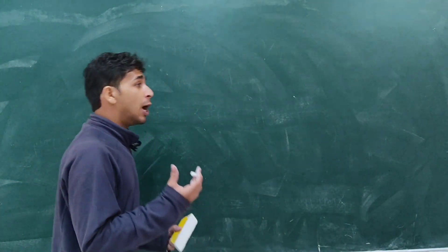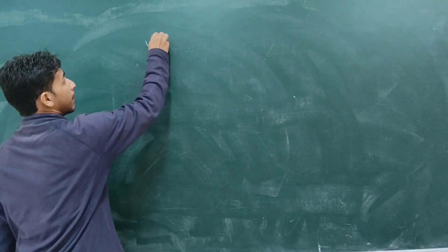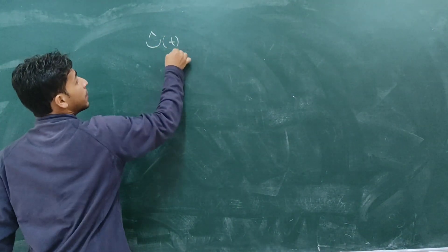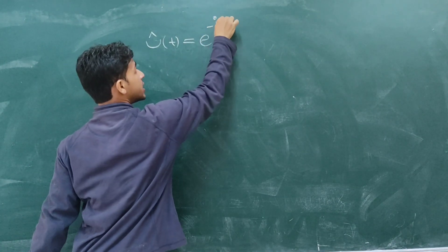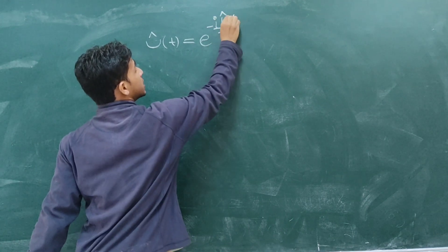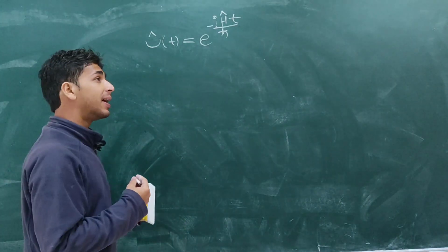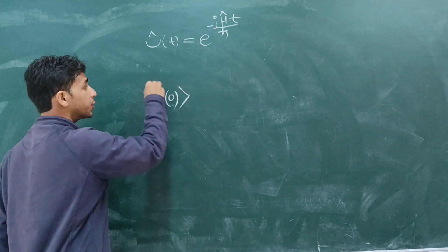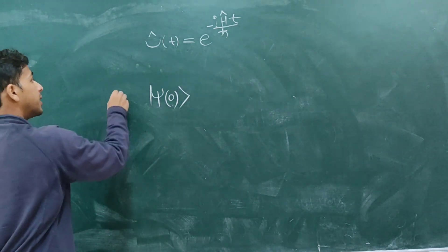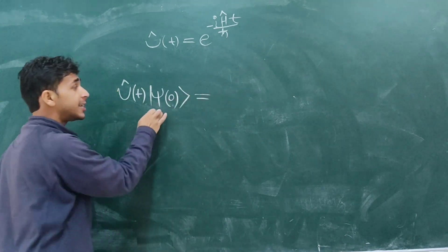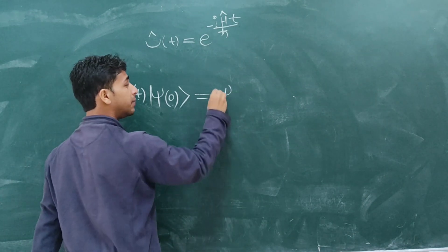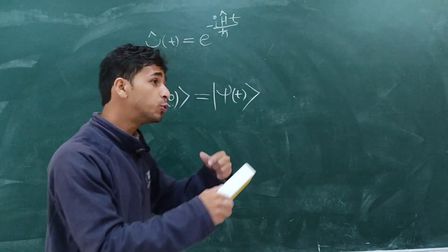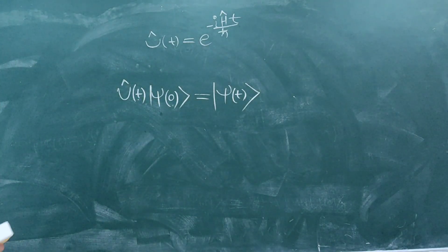One of the most important results from that lecture is when you apply an operator called the time evolution operator. The value of the time evolution operator is e to the power negative i times the Hamiltonian operator divided by h-cross times t, where t is time. If you apply this time evolution operator to a state at time t0, operating by U(t) results in the state psi(t). We will use this equation frequently to deduce the Heisenberg equation of motion.